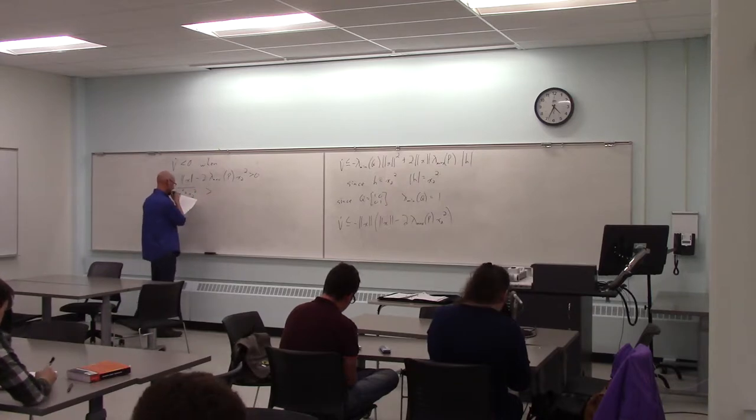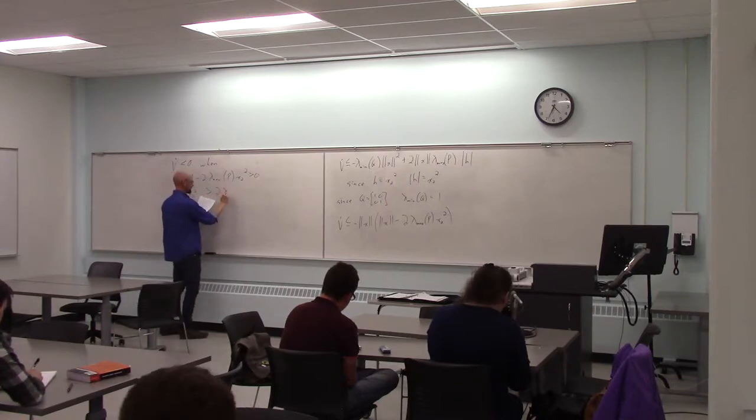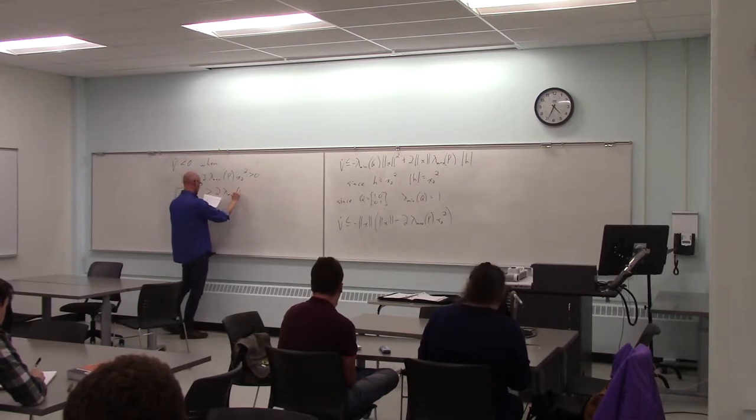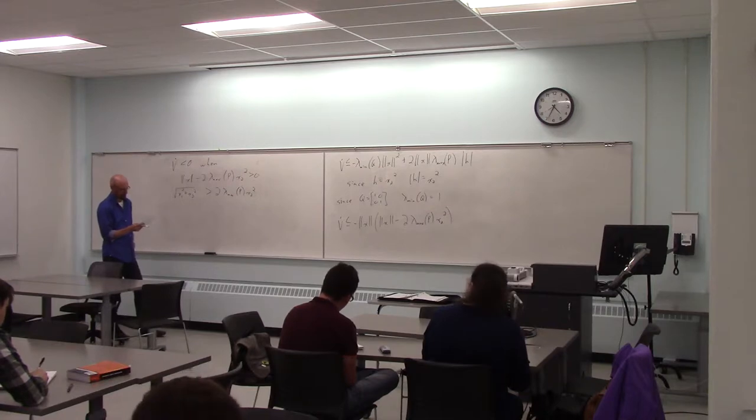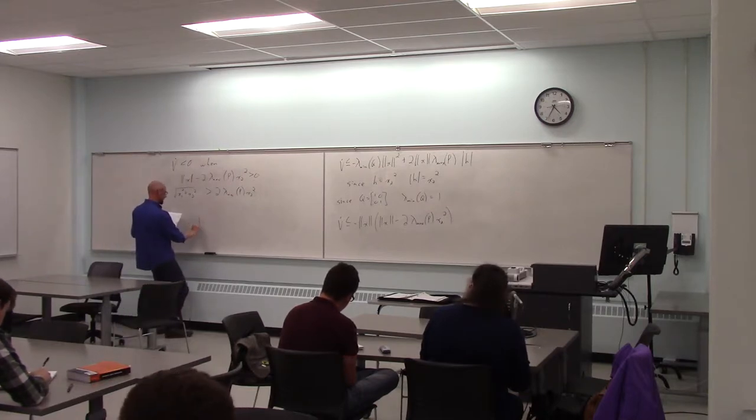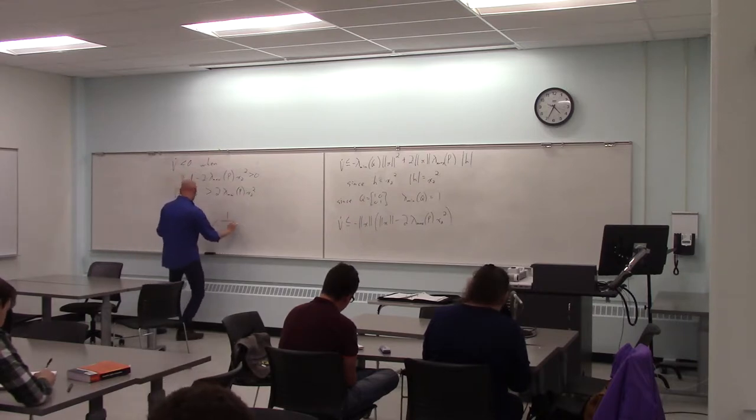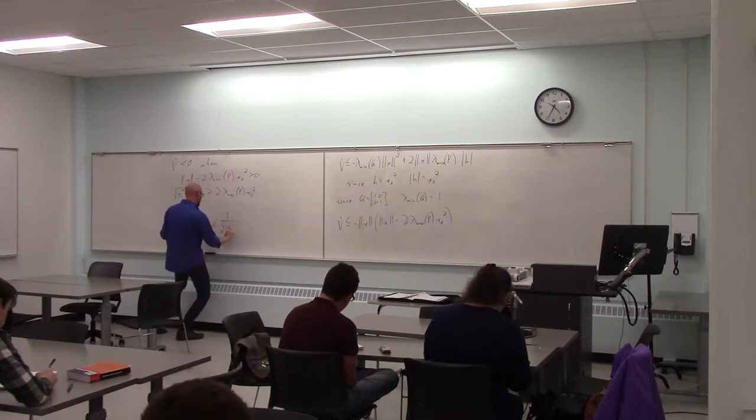Square root of x1 squared plus x2 squared is greater than 2 times the max p times x2 squared. So what I eventually end up with is that the magnitude of x2 has to be less than 1 over 2 times the maximum eigenvalue of p.